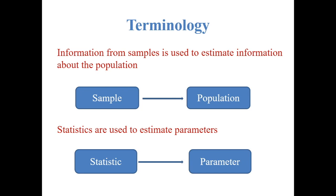Population is a totality of aggregate item under study. For example, if we want to study some characteristics of students in a particular university, then our population is all registered students in that university. A sample is a part of the population. We use sample to estimate some information about the population.